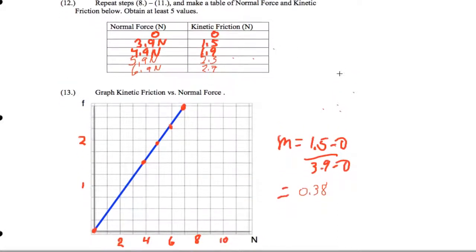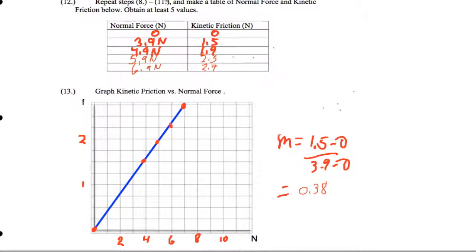This is some data that we got from doing the lab. And again, you want to have 4.00 being one of those points. So I've got normal forces for various masses and the corresponding kinetic frictions that I measured from the spring.